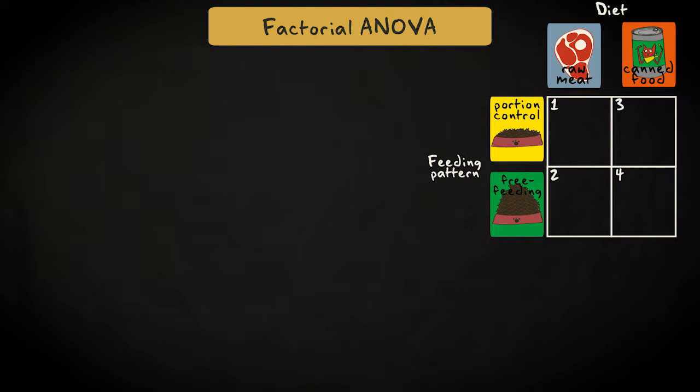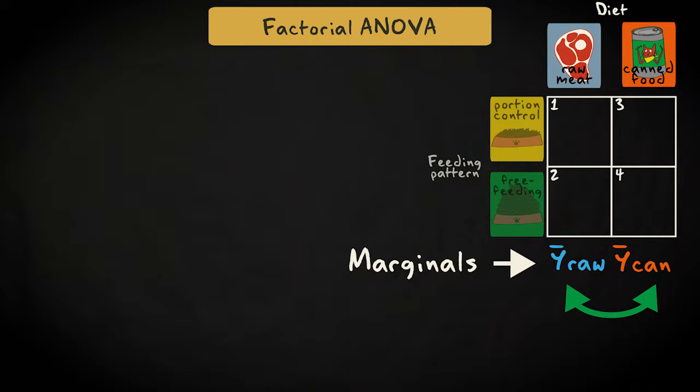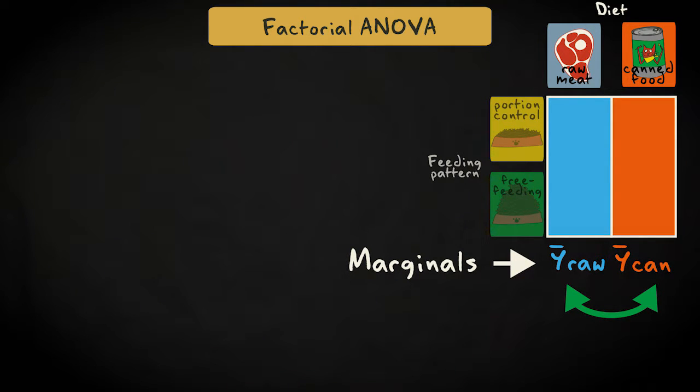Let's keep things simple and consider the two by two example. We can compare the groups in several ways. First, we can consider the effect of diet by collapsing over feeding pattern and comparing the marginals for diet. So we ignore the distinction between controlled versus free feeding, and compare all cats fed on raw meat with all cats fed on canned food.